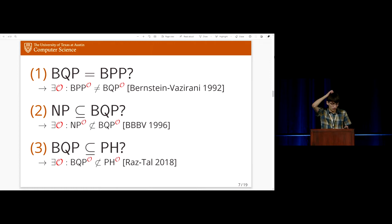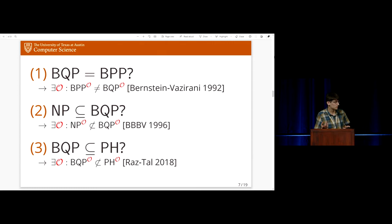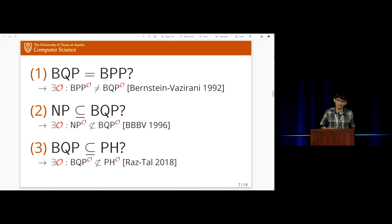Before moving on, I want to point out that there was a more than 20-year gap between those first two oracle separation results, proved early in the history of quantum complexity theory, and the third result from 2018. This is no coincidence — it was a notorious open problem whether BQP is contained in the polynomial hierarchy relative to all oracles. Our work relies on this last result in many ways, both in the analysis used to prove it, and because many of our results formally require an oracle relative to which BQP is not contained in PH.